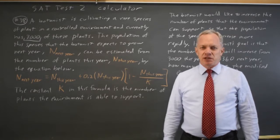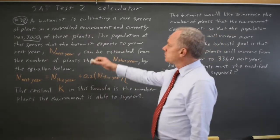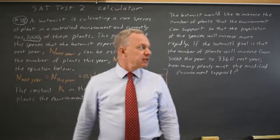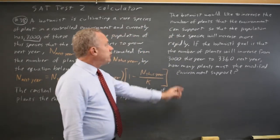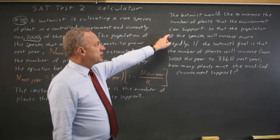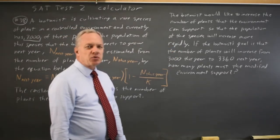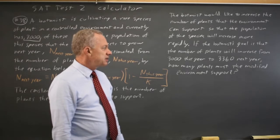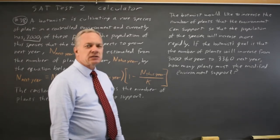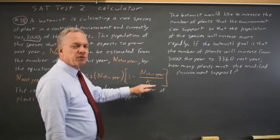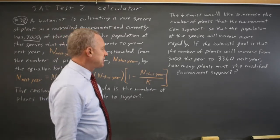This is calculator question number 38. The College Board gives us a word problem describing the almost logistic growth of the population of a plant, and they ask if you wish to increase the number of plants more rapidly so that in one year we go from 3,000 to 3,360, how many plants must the modified environment support where the number the environment supports is K, the carrying capacity.